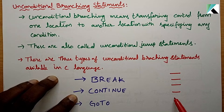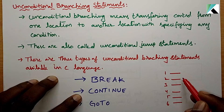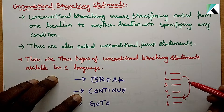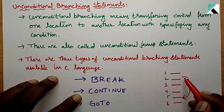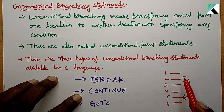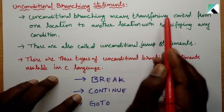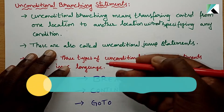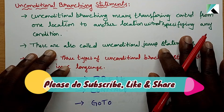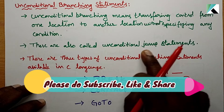This refers to the number of lines in a program. Normally, transferring control from one location to another location happens line by line, instruction by instruction. But with unconditional branching, we transfer control in between statements without specifying any condition. These are also called Unconditional Jump Statements.